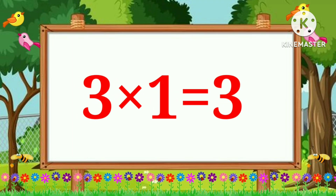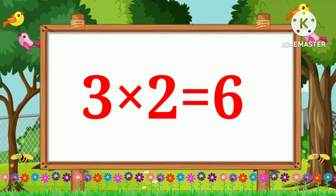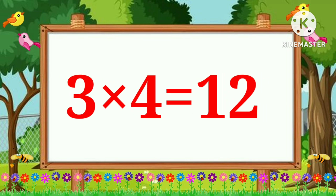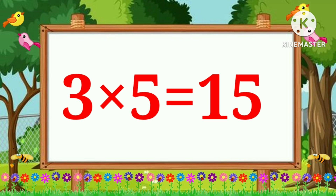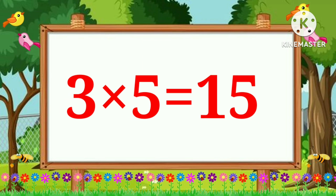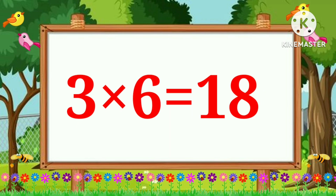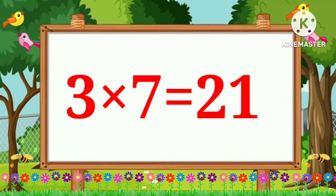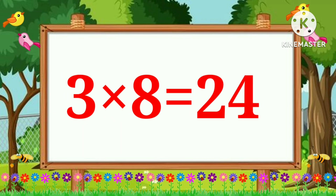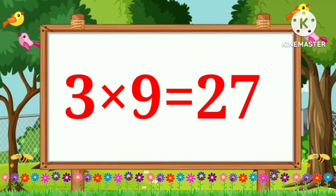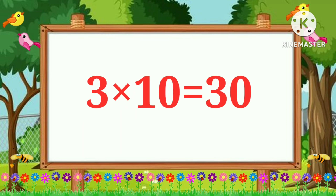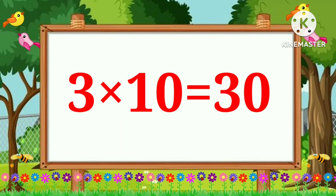Table of Three. Three ones are three. Three twos are six. Three threes are nine. Three fours are twelve. Three fives are fifteen. Three sixes are eighteen. Three sevens are twenty-one. Three eights are twenty-four. Three nines are twenty-seven. Three tens are thirty.